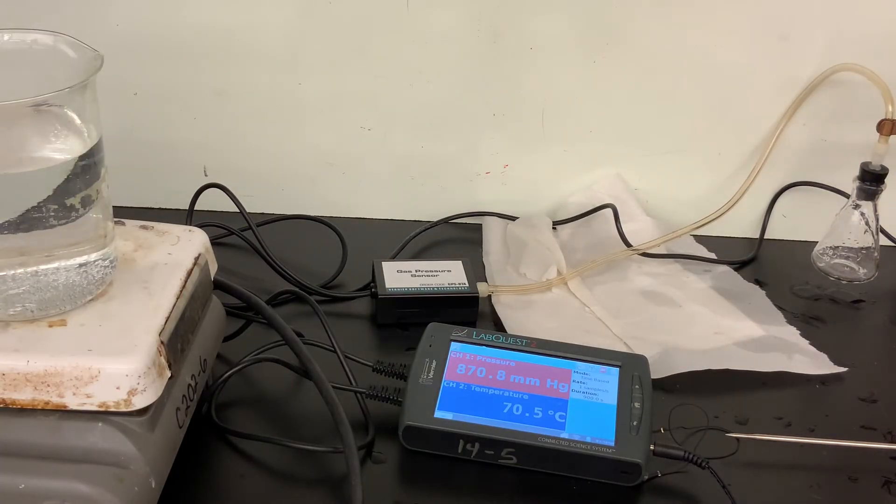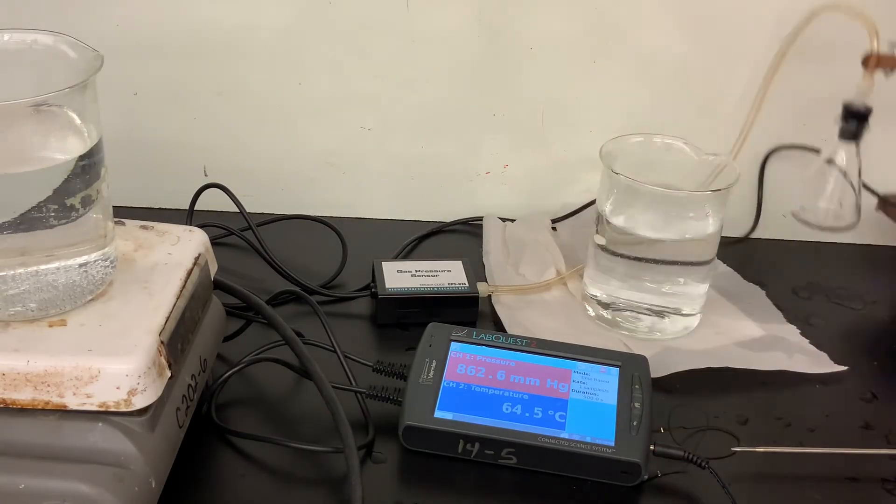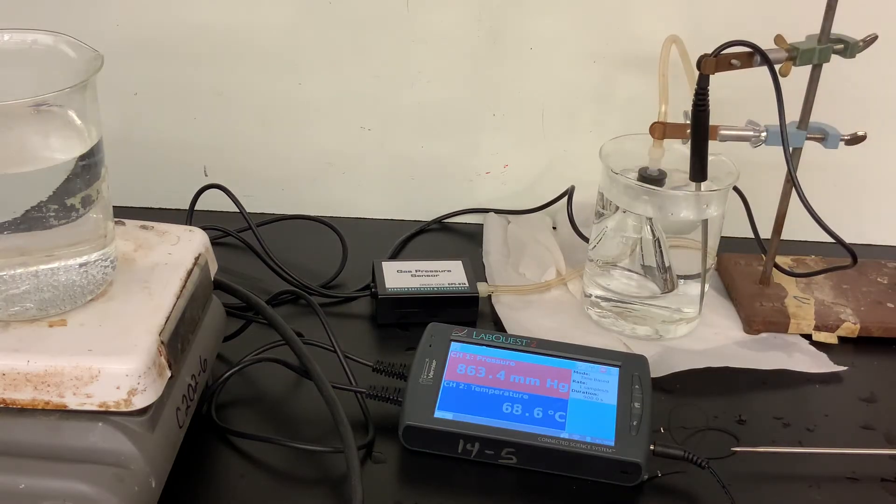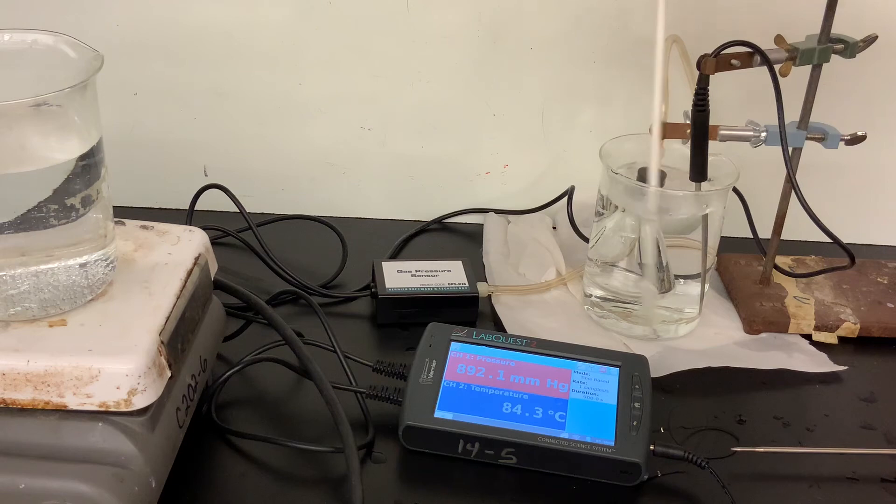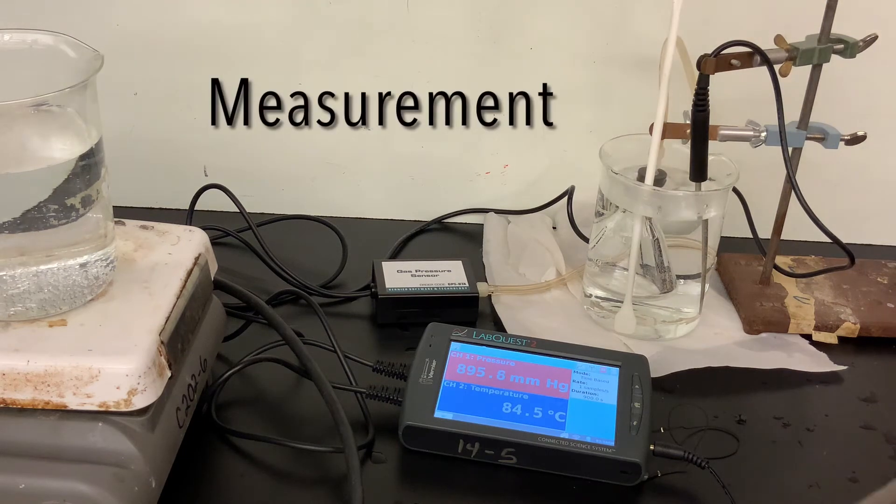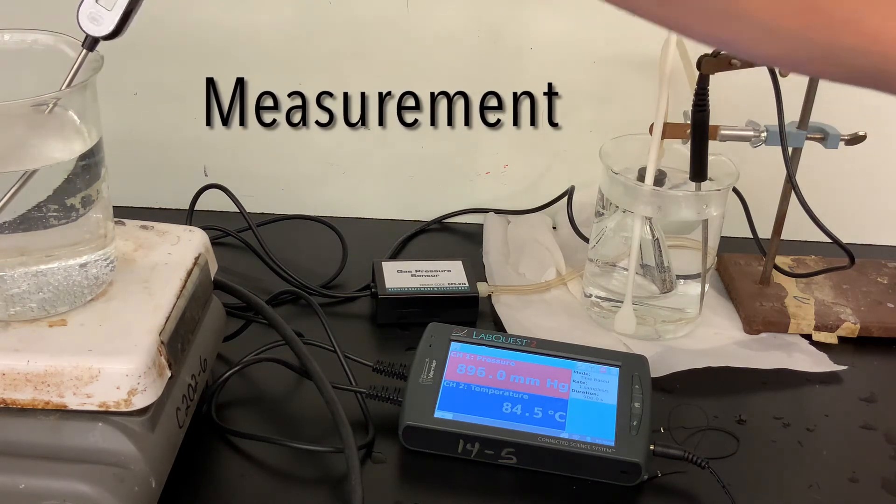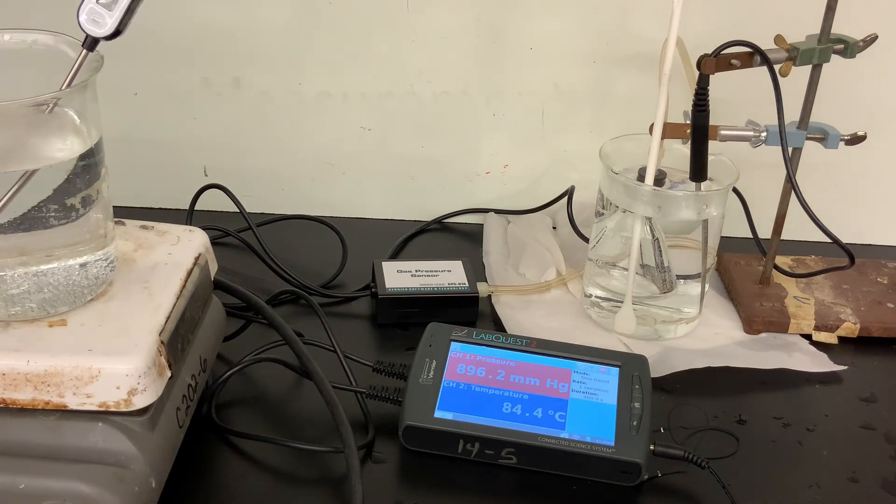So we'll swap out again. Two more measurements we'll make. Trying to get the temperature up quite a bit hotter. Had to use the hot hands that time, beakers are getting quite warm. Stirring. And go right ahead. When we get it stabilized, go ahead and make another temperature and pressure measurement.